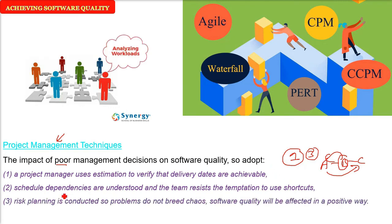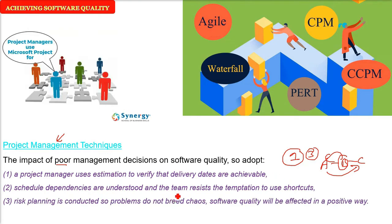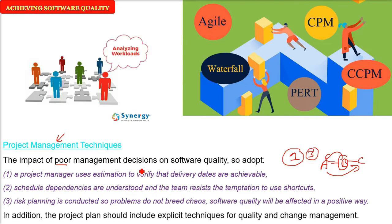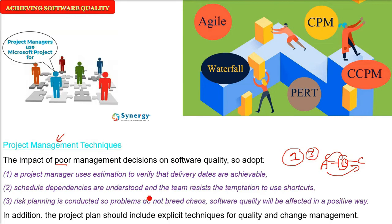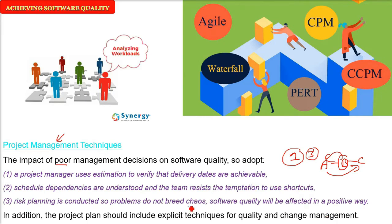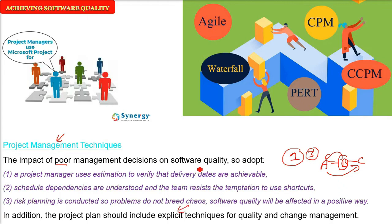Risk planning is important — if you plan for risk, you have contingency plans, you have identified the risks, there will be no chaos, and software quality will not be affected. Along with this, project planning and management should include explicit techniques for achieving quality: change management, configuration management, testing, and different types of testing.